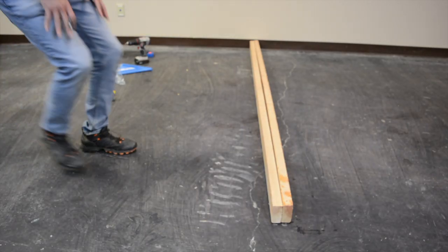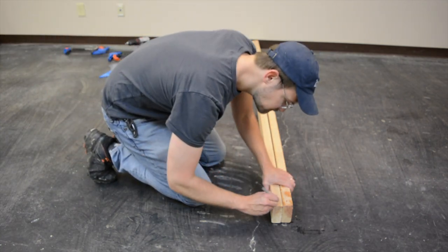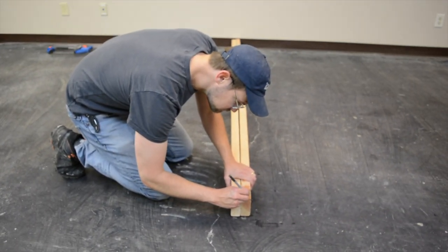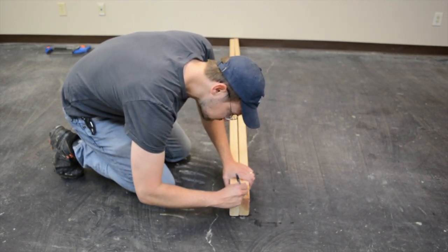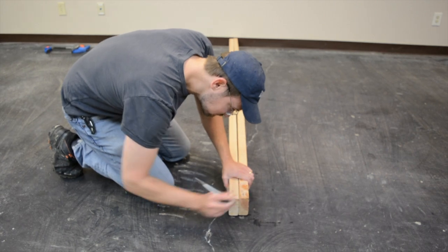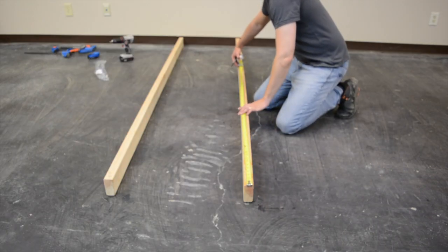First, we're going to lay the 2x4 by 8 foot vertical frame legs on the floor and write 'vertical frame legs' on them. Then we're going to write 'bottom' on the ends of each so we always measure from that same side. Now, measuring from the bottom, we're going to go 55 inches up on each one.